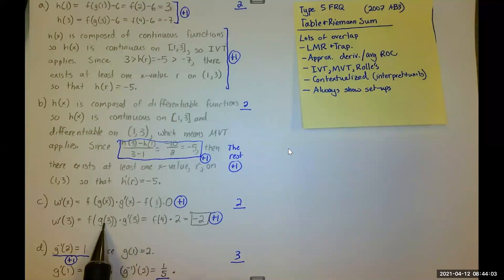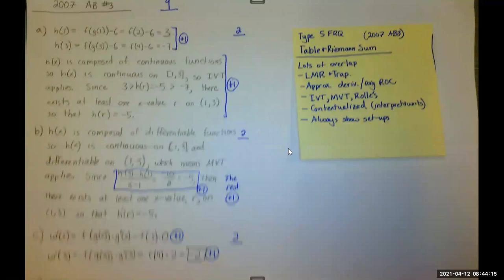When X is 3, G is 4. That comes from the table. So, I need to do F of 4 times 2. 2 is G prime of 3 also comes from the table. F of 4 is negative 1. That's why that's negative 2.